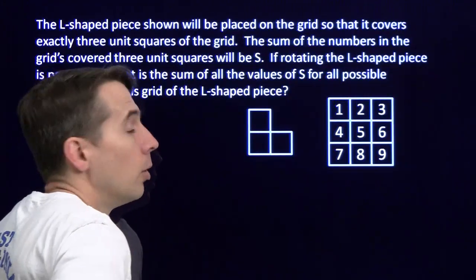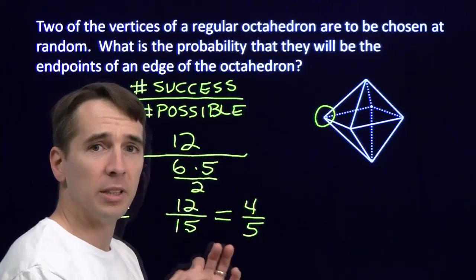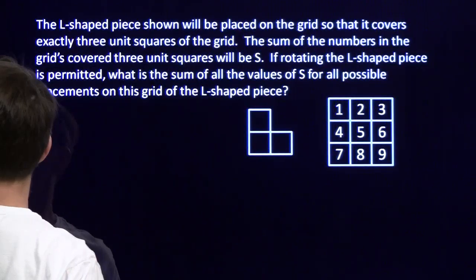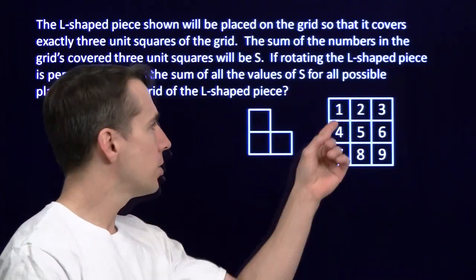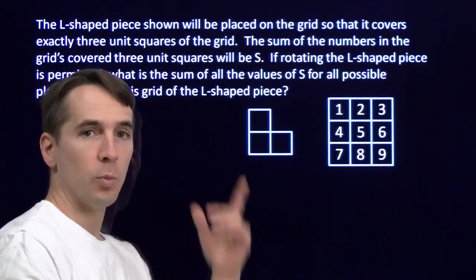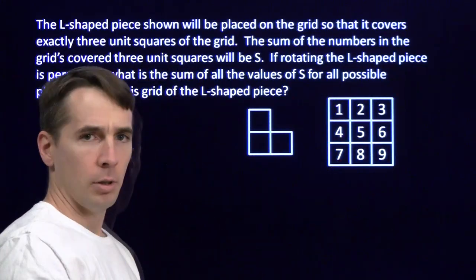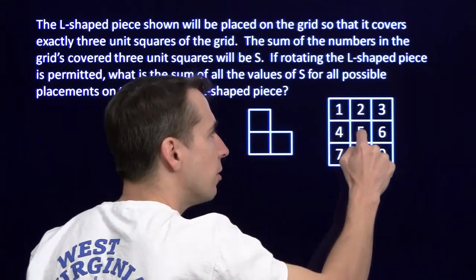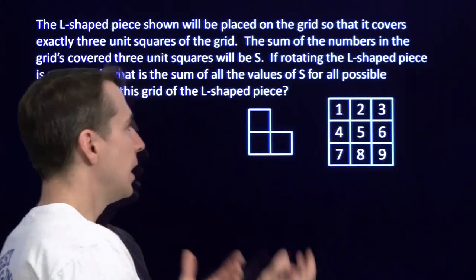So we need to think about this problem a little bit differently. Back with the octahedron, we thought about the problem a little bit differently by looking at one vertex at a time. Let's come back here and look at this problem one number at a time. Let's take a look at the 1 right there. How many times will the 1 pop up in one of these sums, in one of these S's? Well, if the L-shaped piece is here, the 1, 4, and 5, or the 2, 1, and 4, or the 1, 2, and 5. There are three different ways we can get that 1 into our sum.